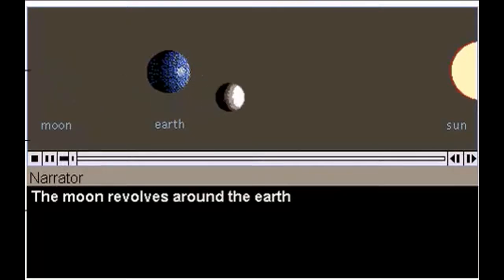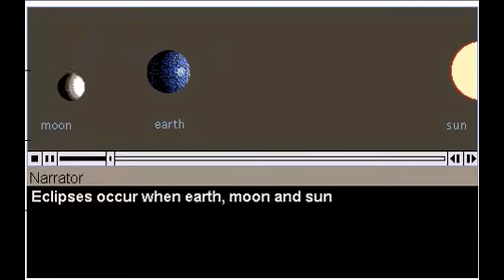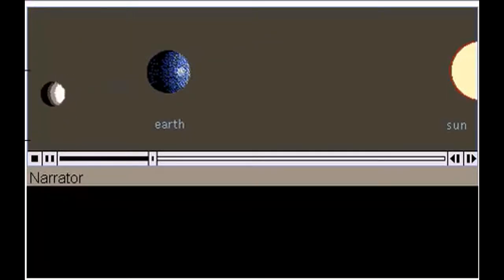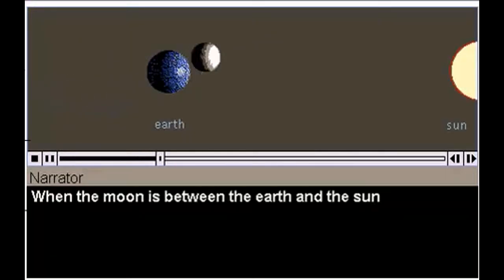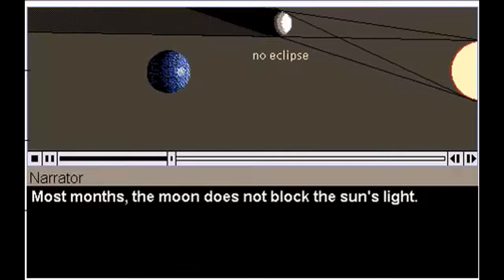The Moon revolves around the Earth in a plane that is inclined slightly to the Earth's orbit. Eclipses occur when Earth, Moon, and Sun are aligned just right. When the Moon is between the Earth and the Sun, its dark side faces us. We call this a New Moon. Most months, the Moon does not block the Sun's light.